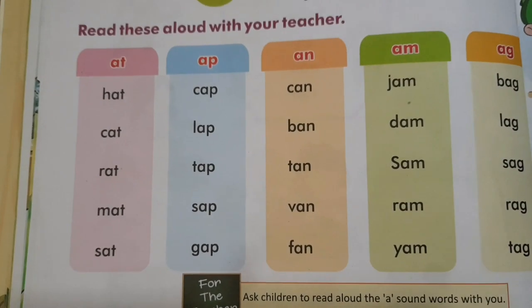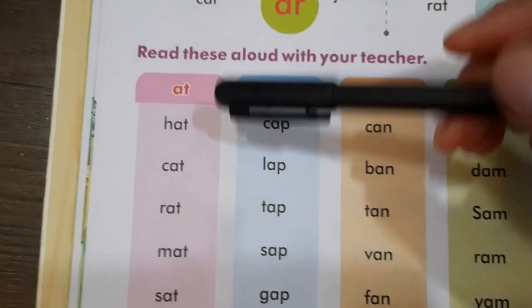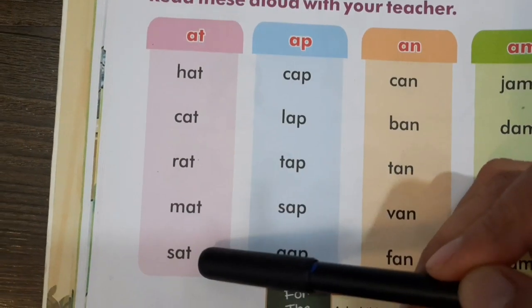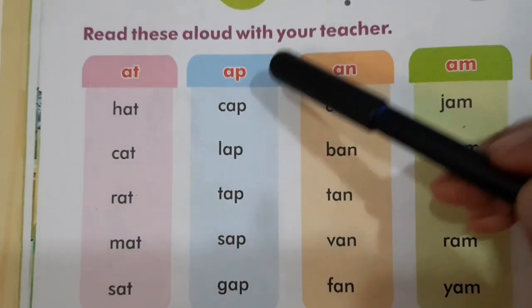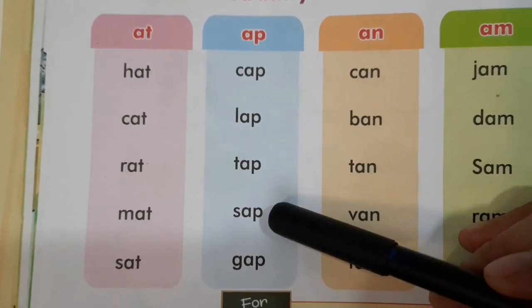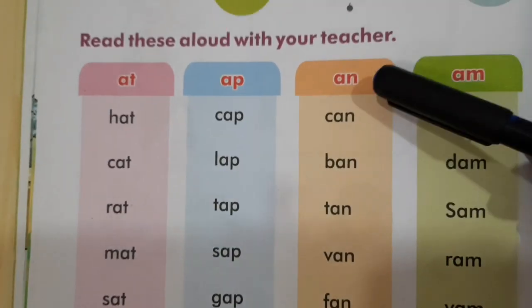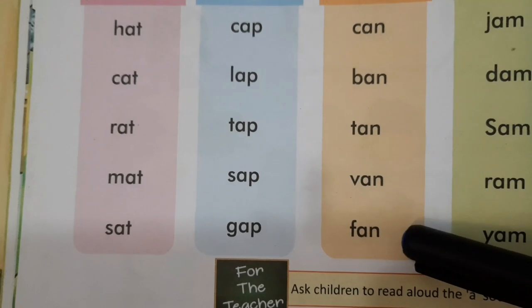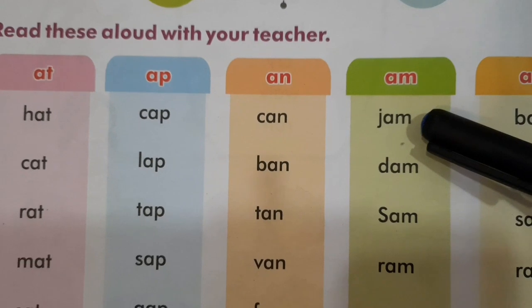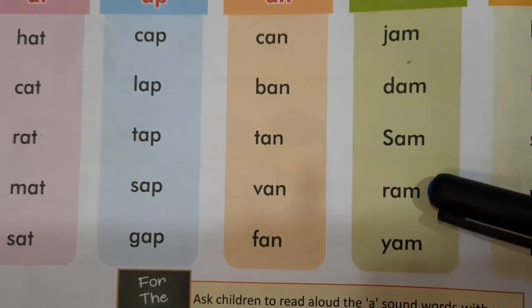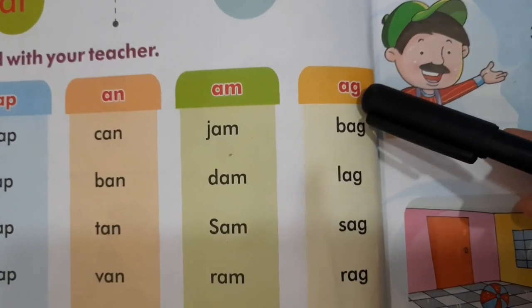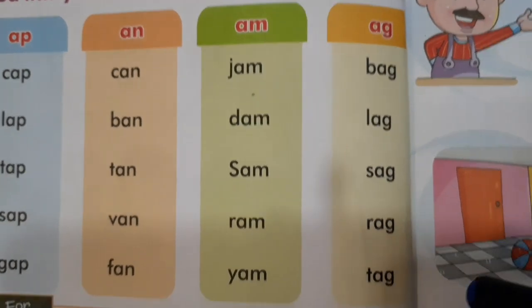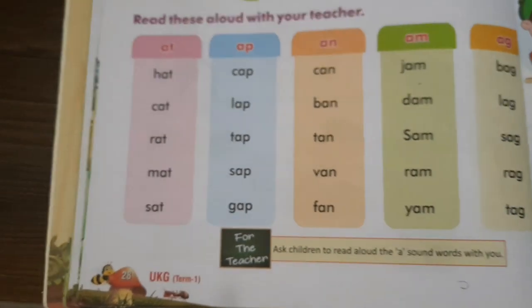We will read these A sound words. The AT words: hat, cat, rat, mat. Now the AP words: cap, lap, tap, sap, gap. Now the AN words: can, tan, fan. The AM words: jam, dam, Sam, ram, yam. And the AG words: bag, lag, sag, rag, tag. So these are our A sound words.